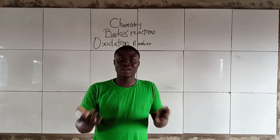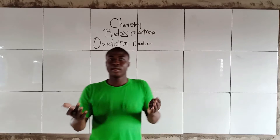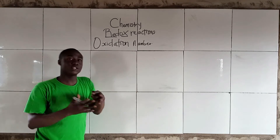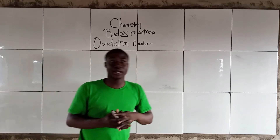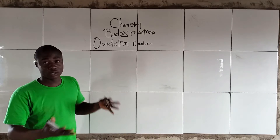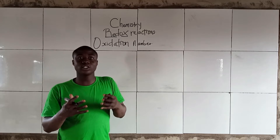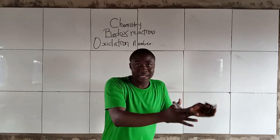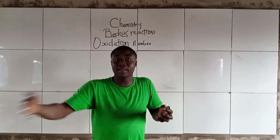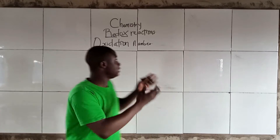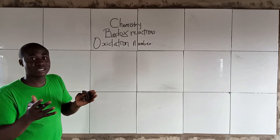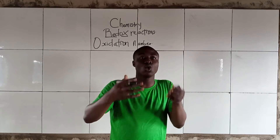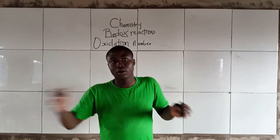Hello, my dear students and welcome back to my YouTube channel. In today's video lesson, I'll be explaining oxidation number on the redox reaction. Talking about oxidation number, oxidation number is simply an electrical charge found in an element. This makes us understand that oxidation number can be determined by some habitual rules.